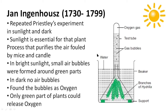Jan Ingenhaus concluded that sunlight is essential for the plant process that purifies air fouled by mice and candles. In another experiment, he used the aquatic plant hydrilla. When kept in sunlight, he observed release of air bubbles from the green parts of the plant; he collected these and found the gas was oxygen. In the dark, no bubbles were released. He concluded that green parts of the plant release oxygen in the presence of sunlight.